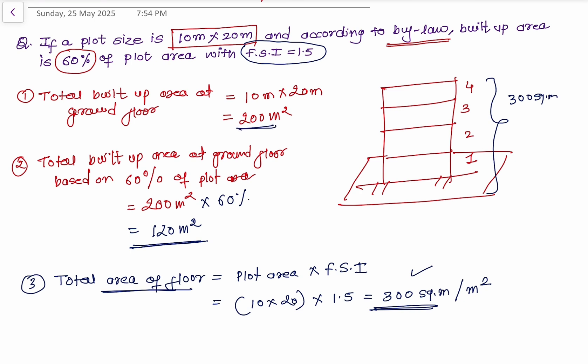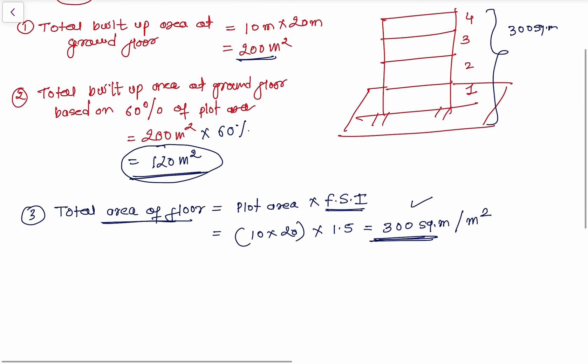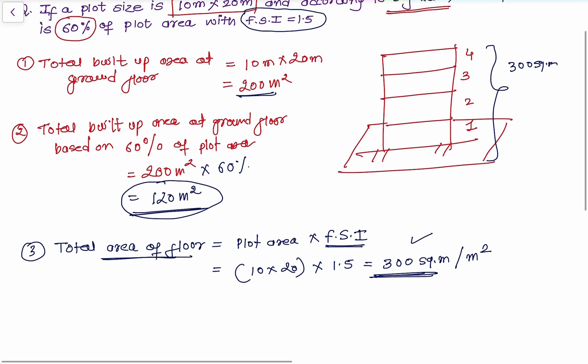So to recap: you have a plot area of 200 square meters, but based on the 60 percent building bylaw you can only construct up to 120 square meters per floor. However, based on your Floor Space Index (FSI), you can construct up to a total of 300 square meters across all floors.